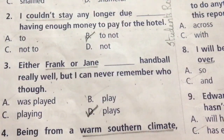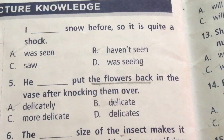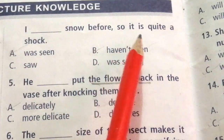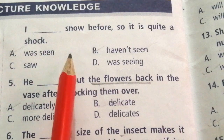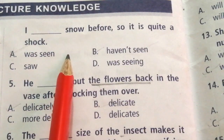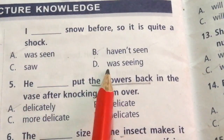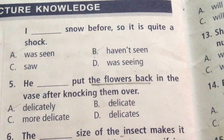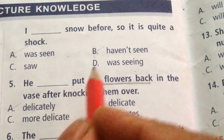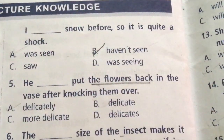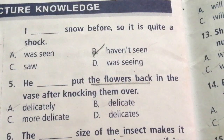Question 4: Being from a warm southern climate, I dash seen snow before, so it is quite a shock. The options are: was seen, haven't seen, saw, was seeing. The answer is B: haven't seen. Being from a warm southern climate, I haven't seen snow before, so it is quite a shock.